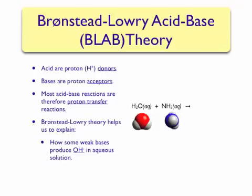Perhaps the only weak base we will encounter in General Chemistry 1 is ammonia, or NH3. NH3 is water-soluble and was encountered in the first video lecture as a weak electrolyte. It is also considered to be a weak base. However, under the Arrhenius definition — which says that bases must produce hydroxide ion when dissolved in water — it is unclear based on ammonia's chemical structure how it produces OH- in solution.